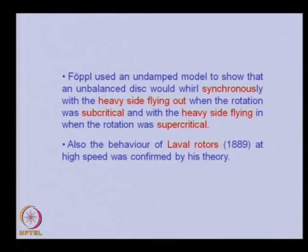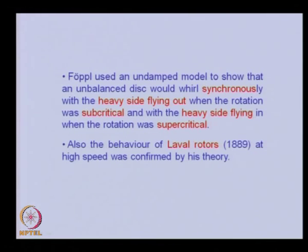This was the first time the term 'critical speed' was used for the resonance rotational speed. Even with this general knowledge of critical speed, the shaft behavior at any general speed was still unclear. More was learned from the calculation of unbalanced vibrations as given by Fopel in 1895. Fopel used an undamped model to show that an unbalanced disc would whirl synchronously with the heavy side flying out when the rotation was sub-critical, and with the heavy side flying in when the rotation was super-critical. The behavior of De Laval's rotor in 1889 at high speed was confirmed by this theory.